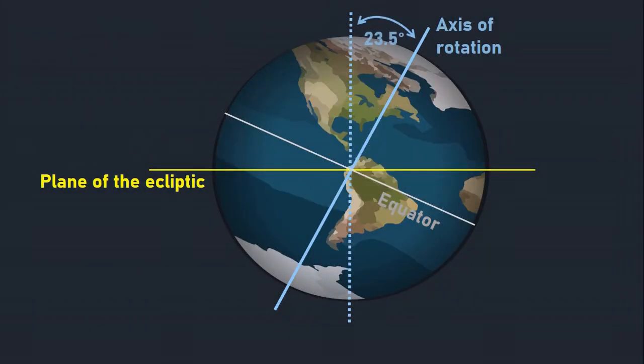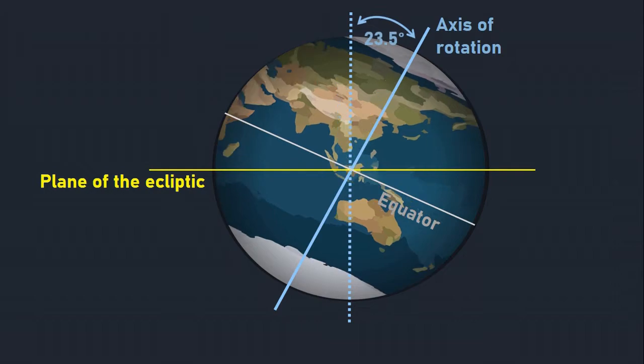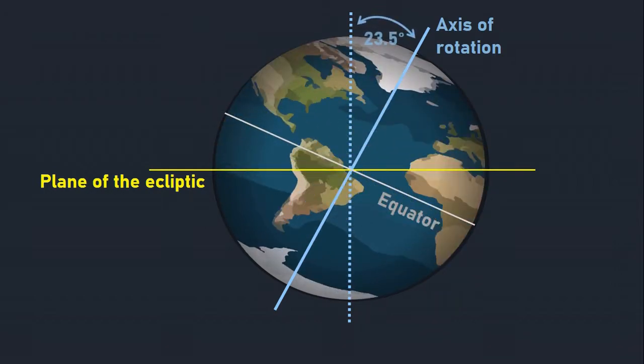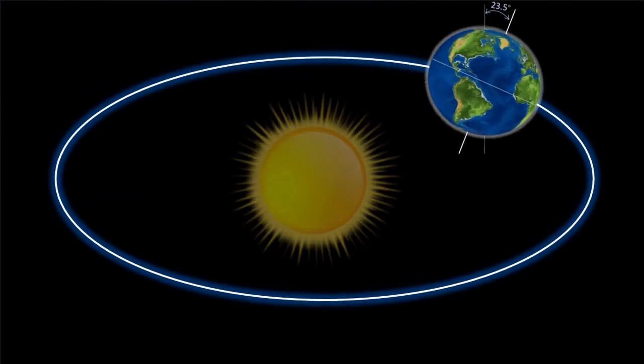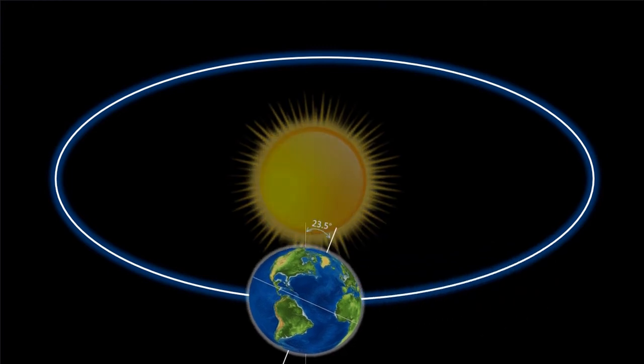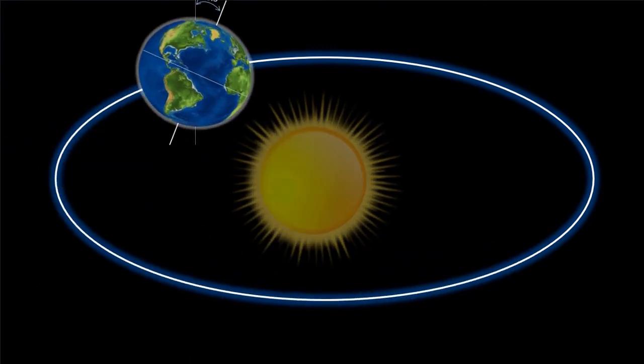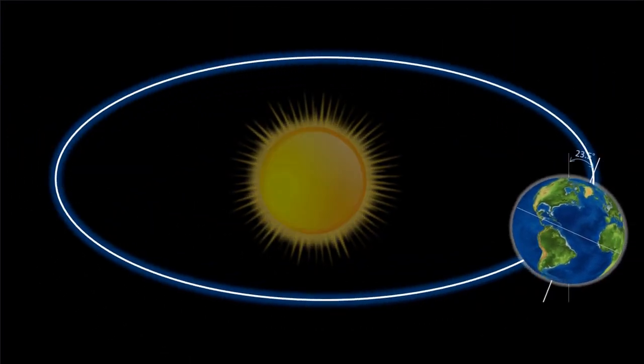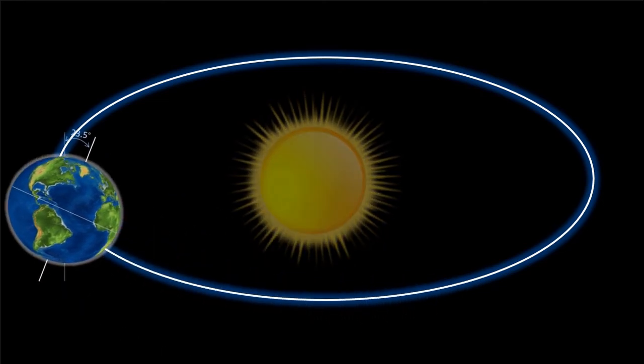This 23.5 degrees axial tilt is almost fixed. No matter where Earth is positioned in its revolution around the Sun, the axis points in the same direction and remains at the same angle. This principle is known as parallelism.